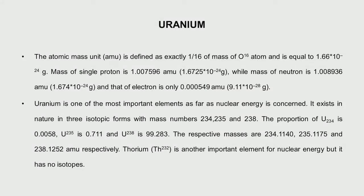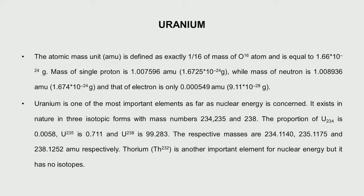Let us come to mass. In an atom, we use units called atomic mass units, which refers to 1/16th of the mass of an oxygen atom, equal to about 1.66 × 10⁻²⁴ grams. The mass of a proton is around 1.6725 × 10⁻²⁴ grams, and the electron is only 9.11 × 10⁻²⁸ grams.